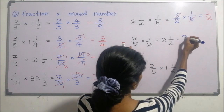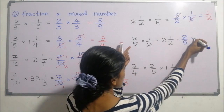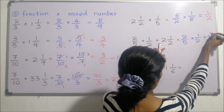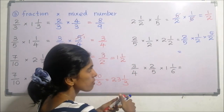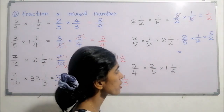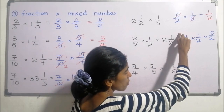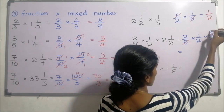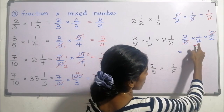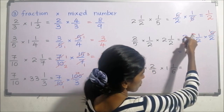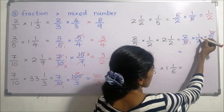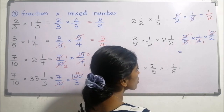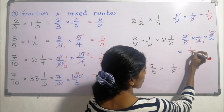Next: two over five multiplied by five over two — now simplify: five and five cancel, two and two cancel. Remaining numbers multiply to give one over two — one half.